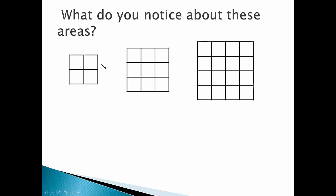They've got the same number of rows and columns. 2 by 2, 3 by 3, 4 by 4. We could count them or multiply to find out. 2 times 2 is 4. 3 times 3 is 9. 4 times 4 is 16.